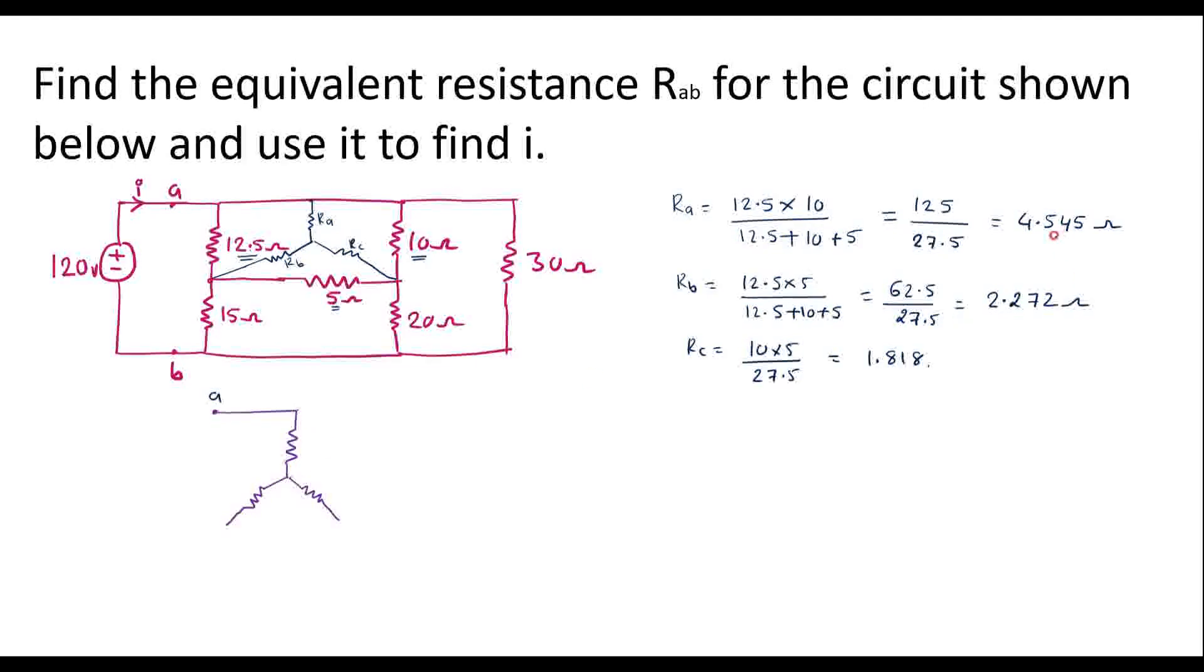The value of RA is 4.545 ohm. This is RB, it is 2.272 ohm. This is RC, its value is 1.818 ohm. Here we can see that from this node, there is a 15 ohm resistor in series with this, and here we have 20 ohm. This is 15, this is 20, this terminal is connected to B, and here we have 30 ohm resistor which is parallel with this entire combination.